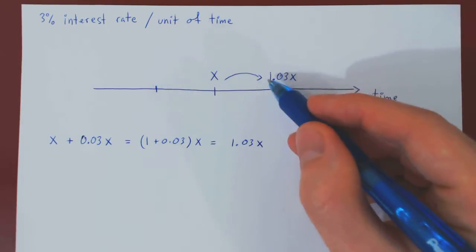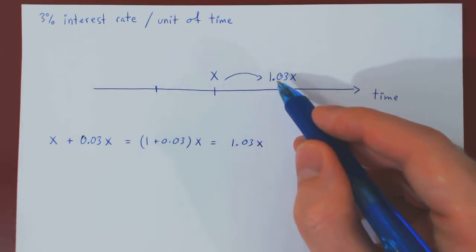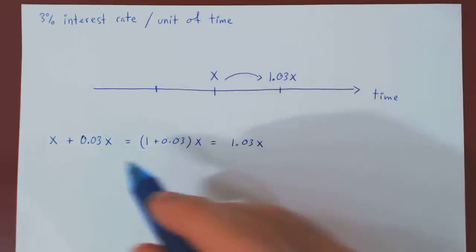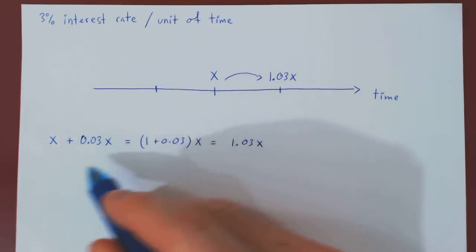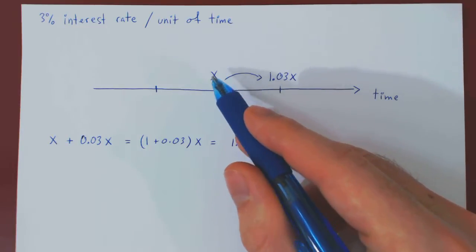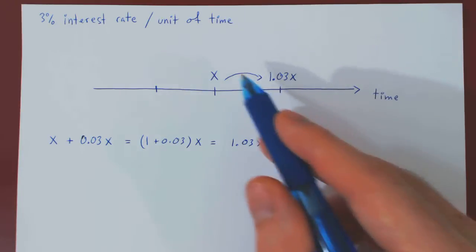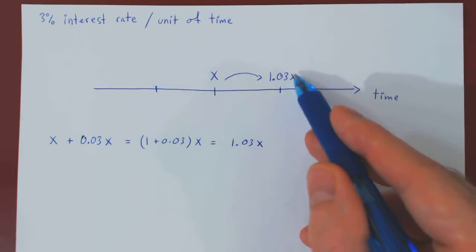So always think of it as 1 times X gives you back the capital plus 0.03 times X gives you back the interest earned on the original investment. So quite simply, if you move an investment X by one unit of time, it becomes 1.03X.